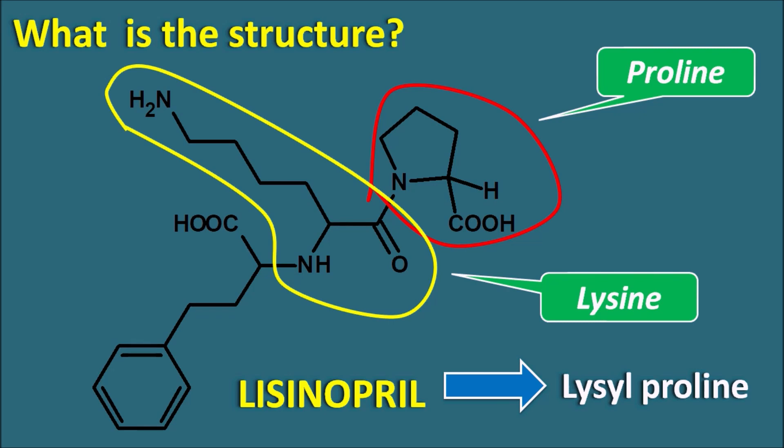This drug is an active drug — it does not require any bioactivation. We have a few other drugs within this category like enalapril, ramipril, and fosinopril. All these drugs require bioactivation; they are prodrugs. But Lisinopril is an active drug.